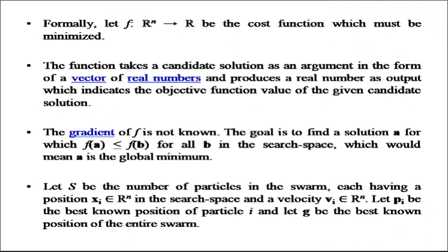Formally, let a cost function f be defined as ℝⁿ → ℝ, and this must be a minimized function. The function takes a candidate solution as an argument in the form of a vector of real numbers and produces a real number as output, which indicates the objective function value of the given candidate solution. The gradient of f is not known. The goal is to find a solution a for which f(a) ≤ f(b) for all b in the search space, which means a is the global minimum. Let s be the number of particles in the swarm, each having a position xᵢ ∈ ℝⁿ and a velocity vᵢ ∈ ℝⁿ. Let pᵢ be the best known position of particle i, and let g be the best known position of the entire swarm.